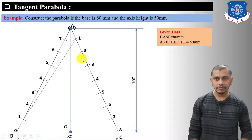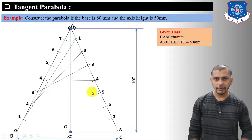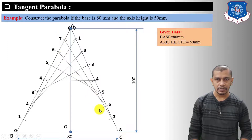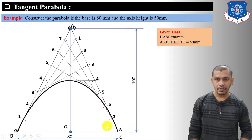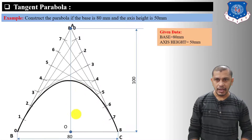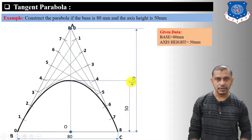Now connect 1 to 1, 2 to 2, 3 to 3, 4 to 4, 5 to 5, 6 to 6, 7 to 7. You can see the shape of the parabola forming — just darken the shape and you will get the parabola by the tangent method. The axis side of the parabola is 50 mm as given.